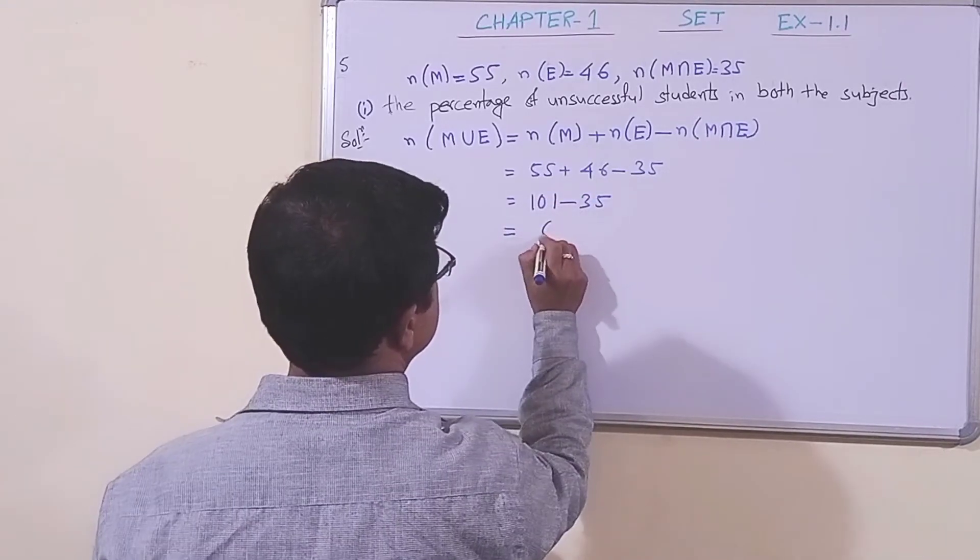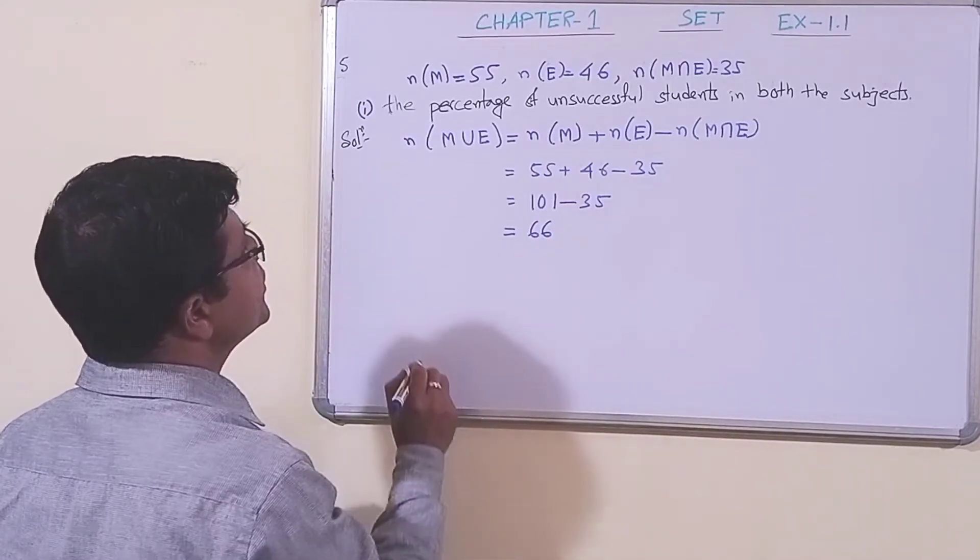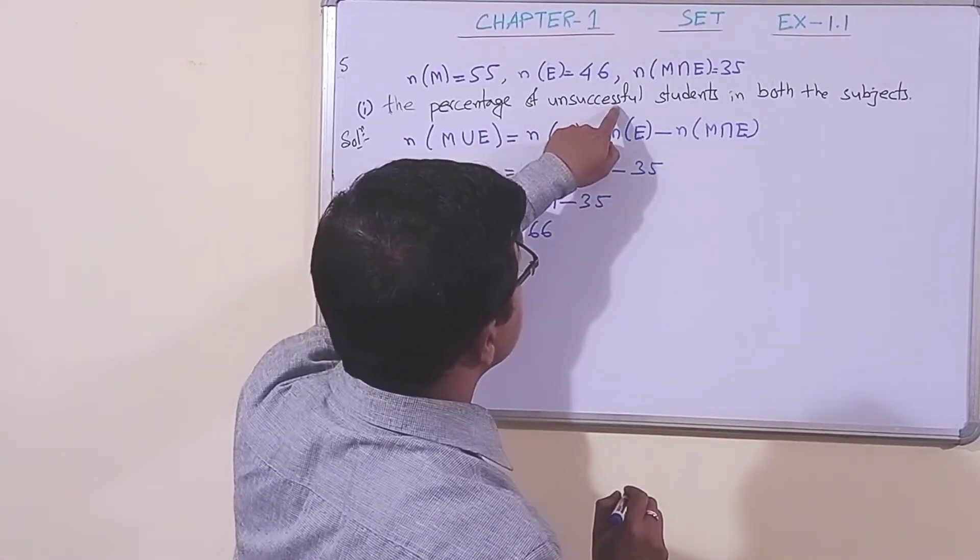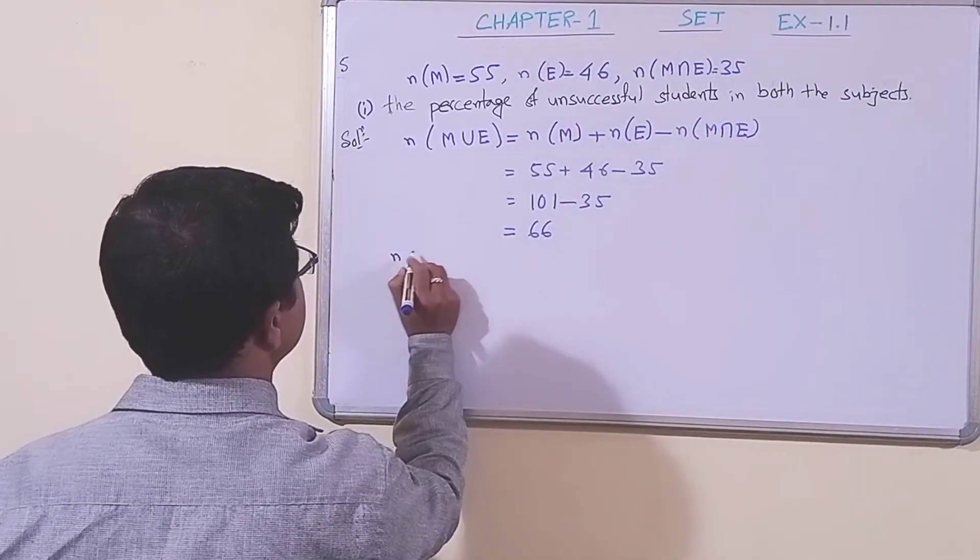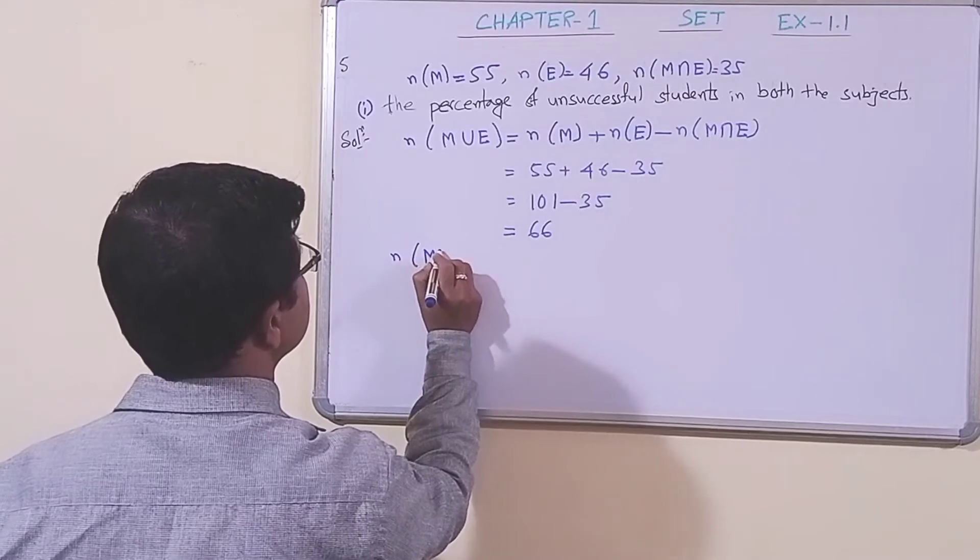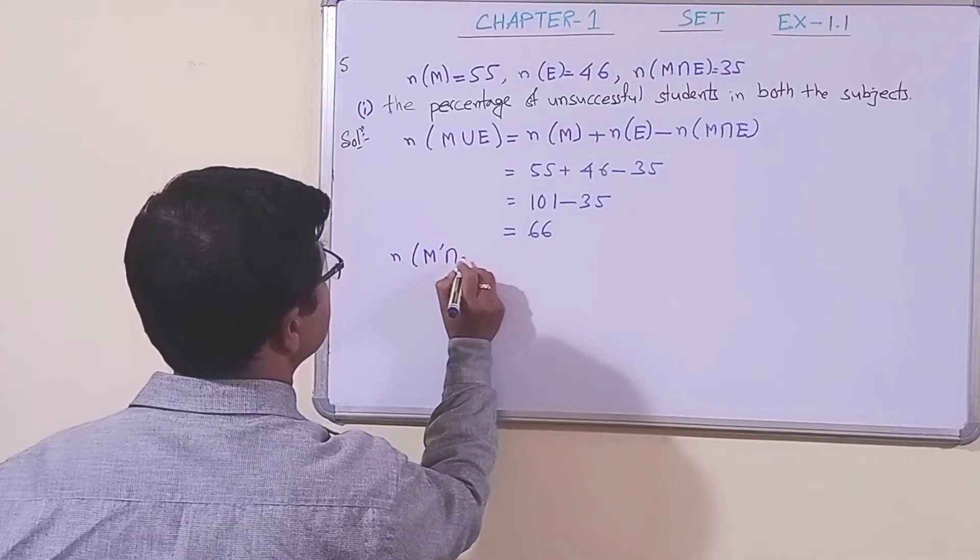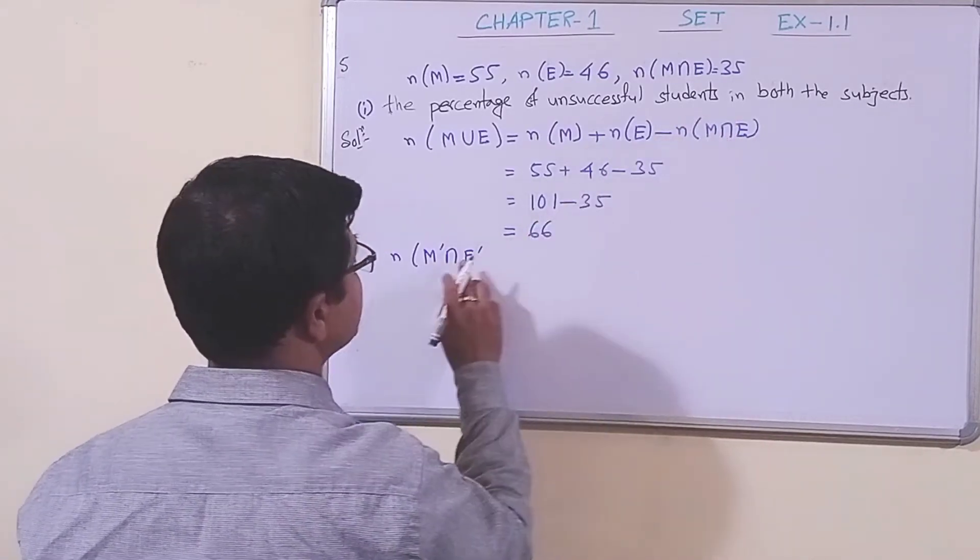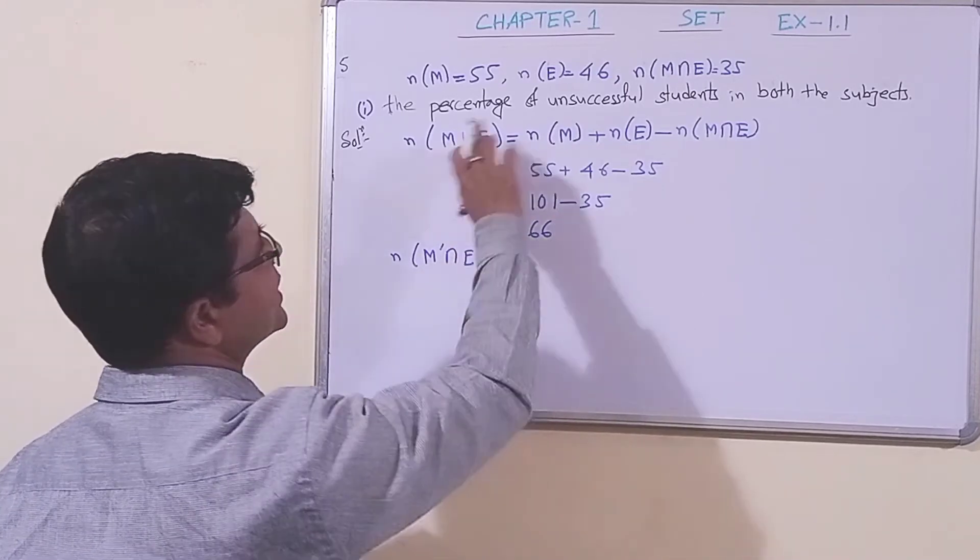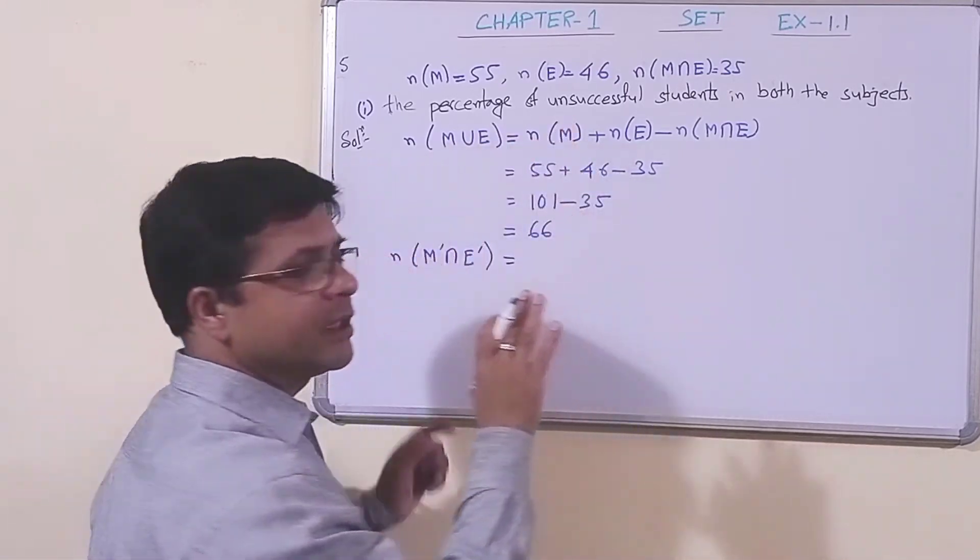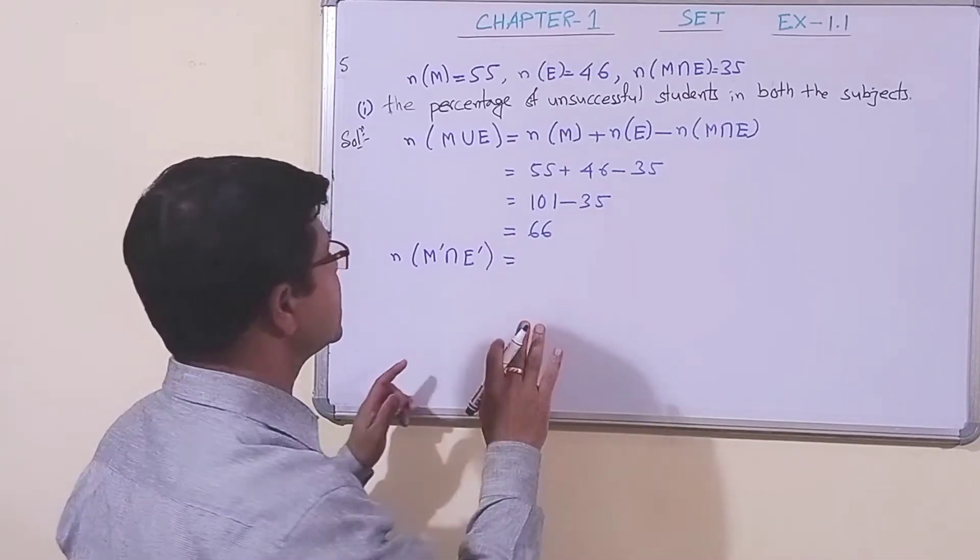If we subtract, we get 66. Now the question is, we have to find the percentage of unsuccessful students in both subjects. That is, we need to find n(M'∩E'). Since "both" is given, that's why we took this intersection. To find the percentage of unsuccessful students in both subjects, it will be n(M'∩E') divided by the total number of students.